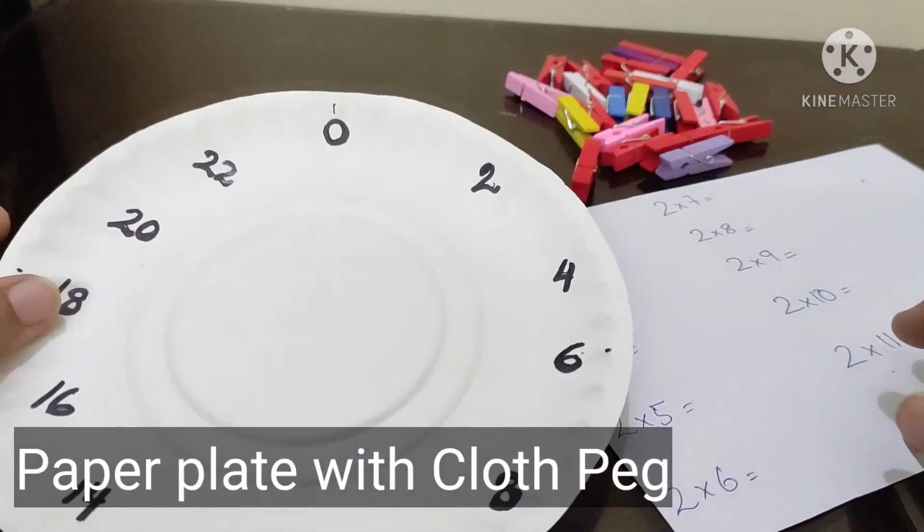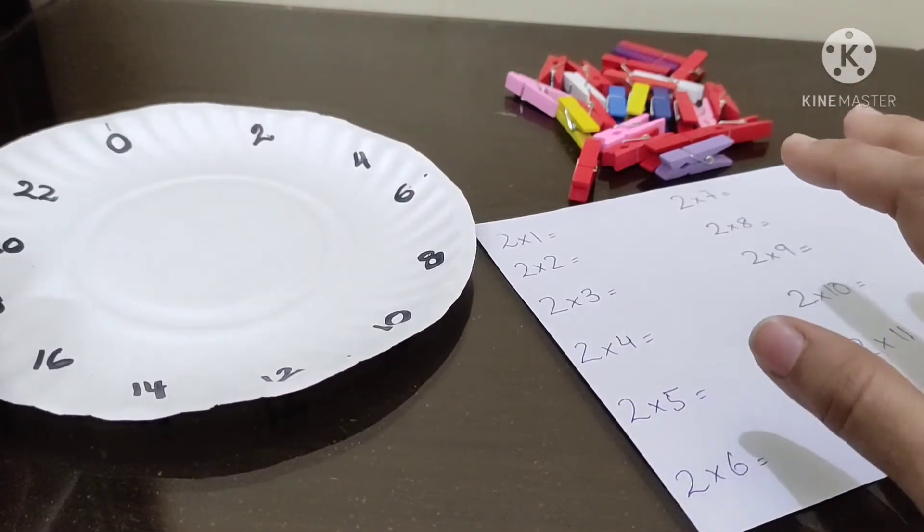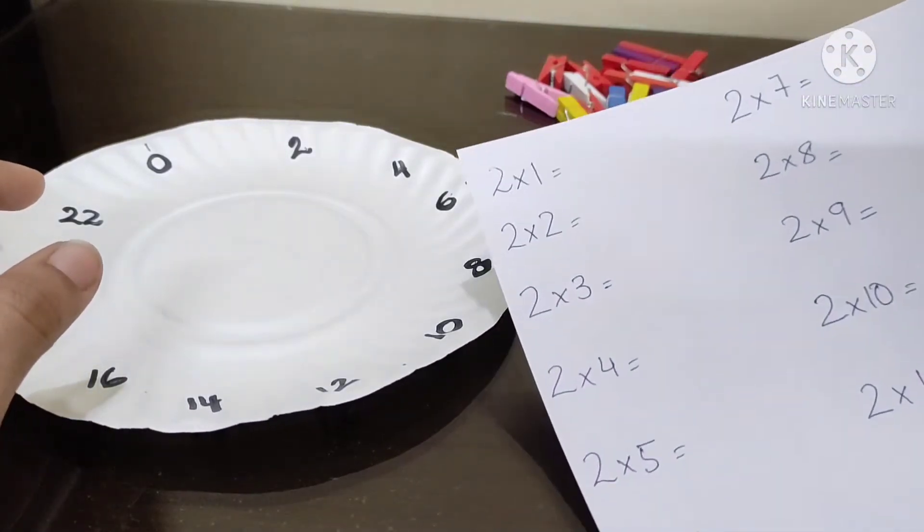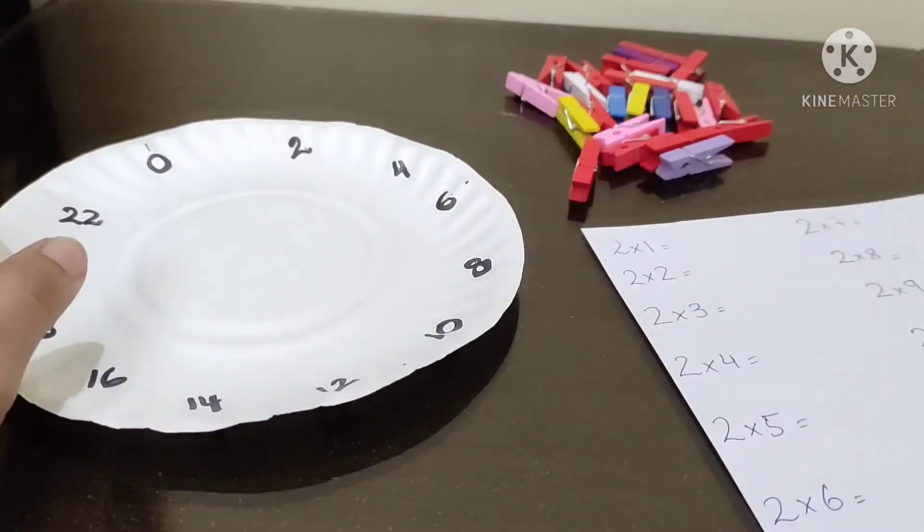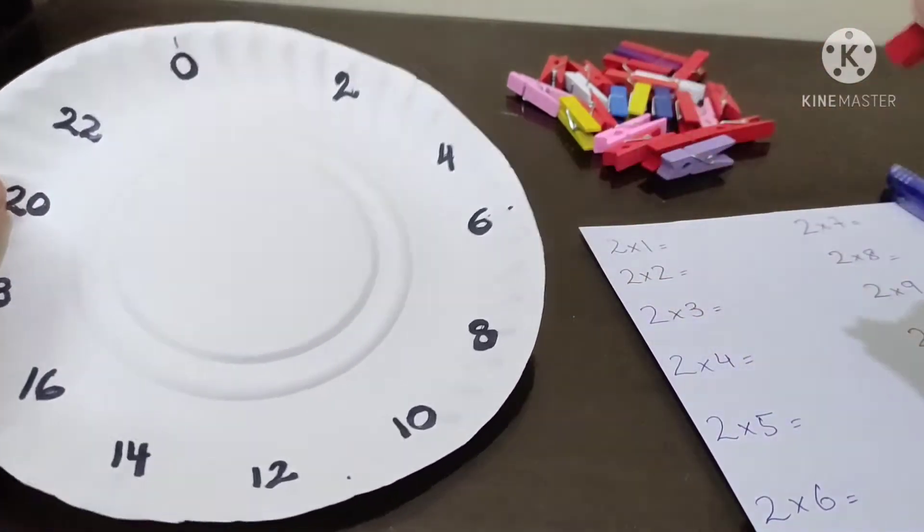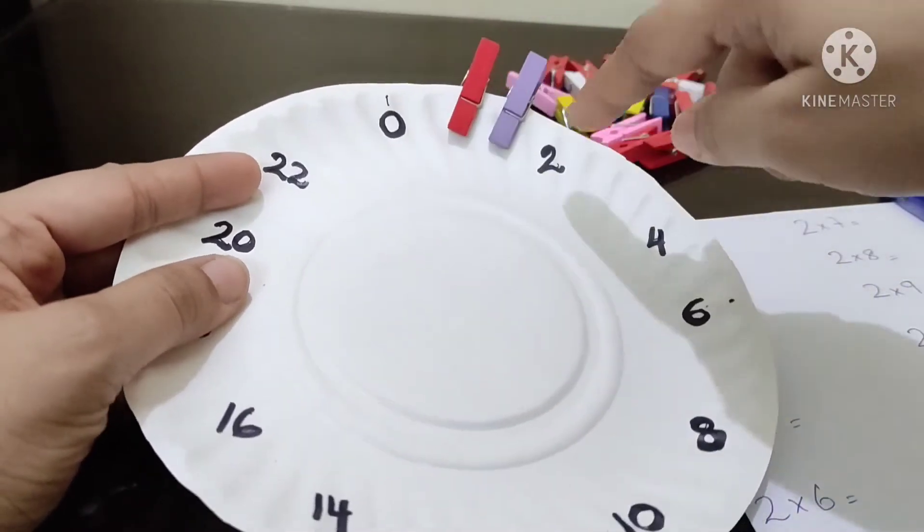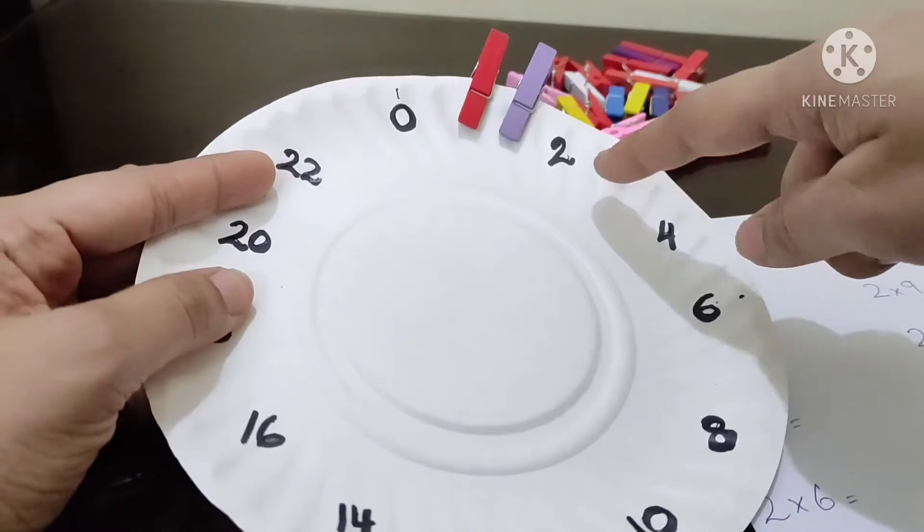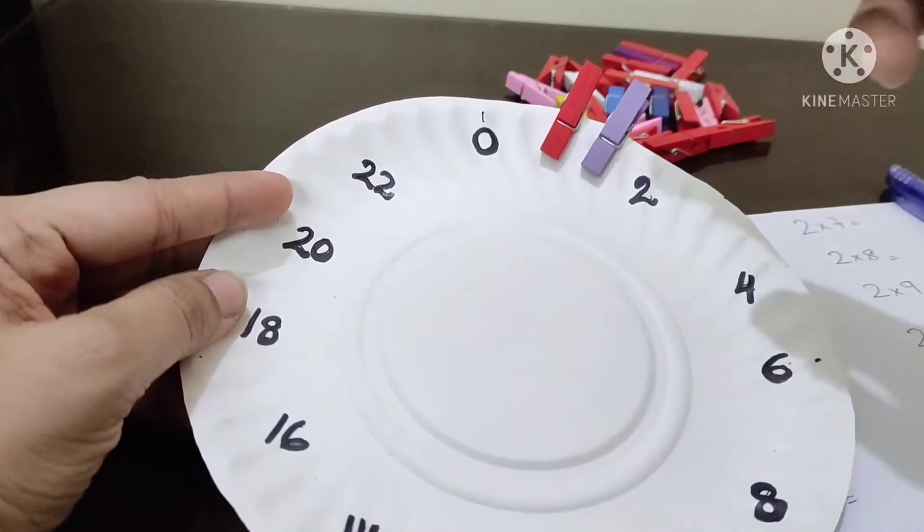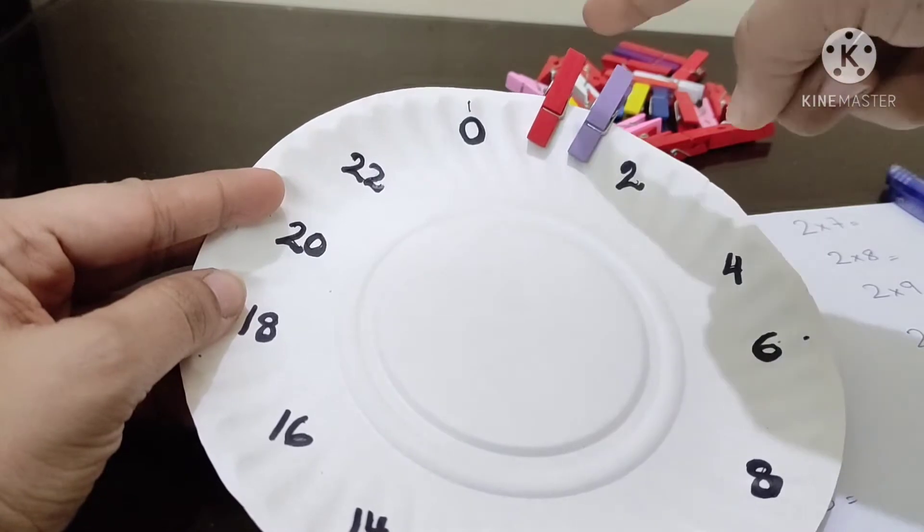So in this activity I took this paper plate and I took some paper clips to show you how skip counting is done. I wrote two times table in front of you and I will teach you how you can teach your children about skip counting. So simply you will add two times table. You will use two clips in each part. If you want to write this number, that's your choice. You can even teach your children whatever number comes next and tell them to write the number while counting the paper clips.